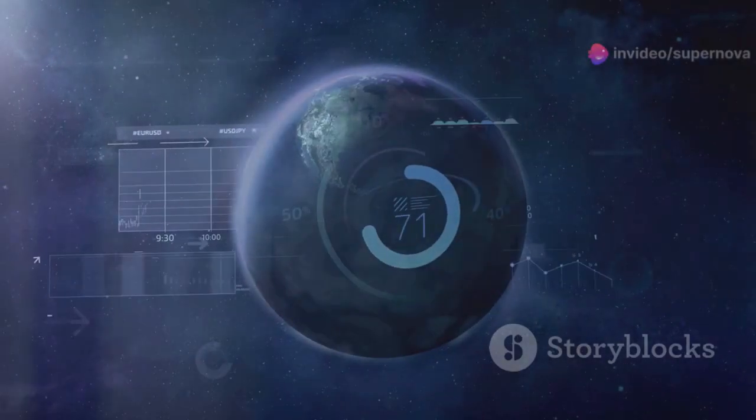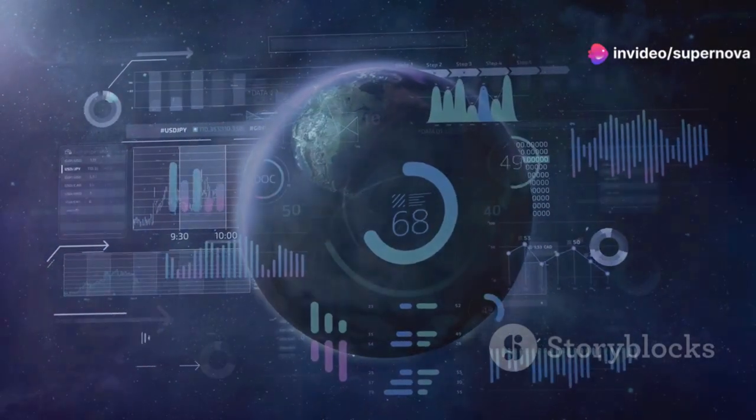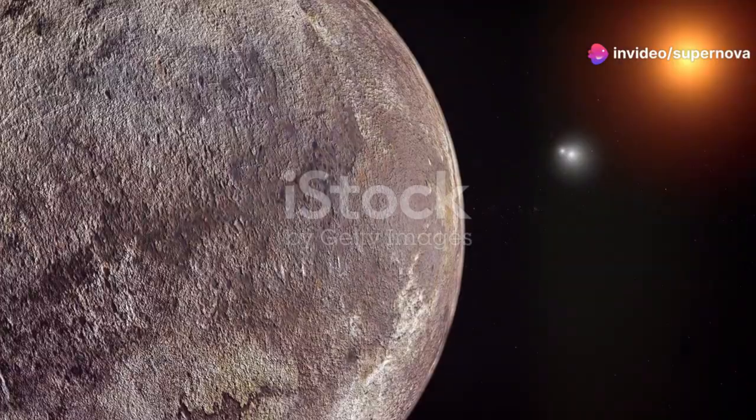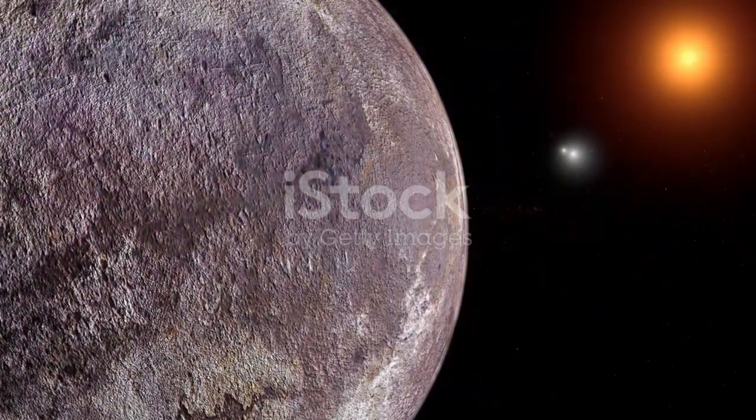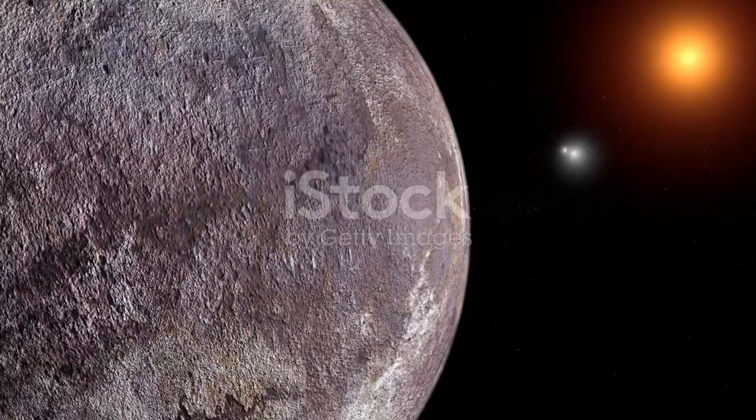This means it could have the right conditions for life such as a stable atmosphere and the presence of liquid water. However, being in the habitable zone doesn't guarantee a planet can support life. There are many other factors to consider.